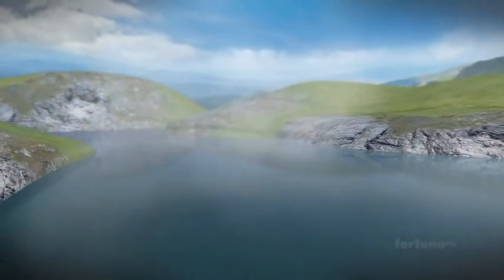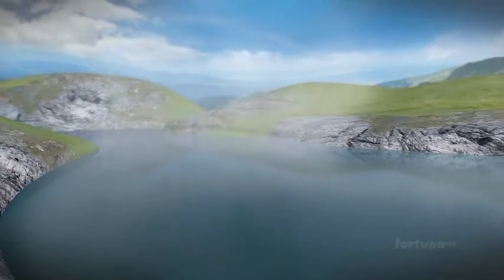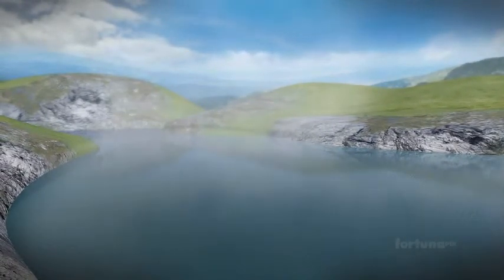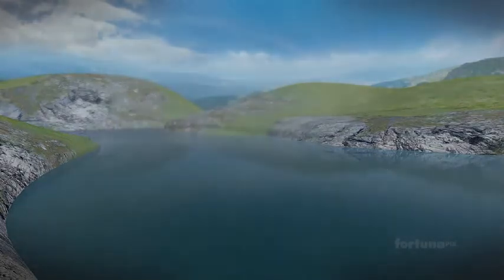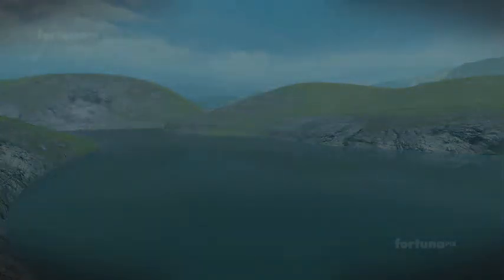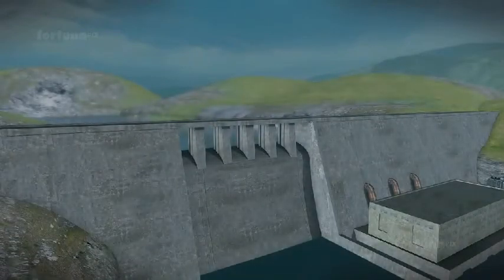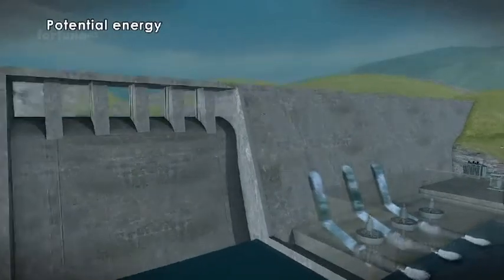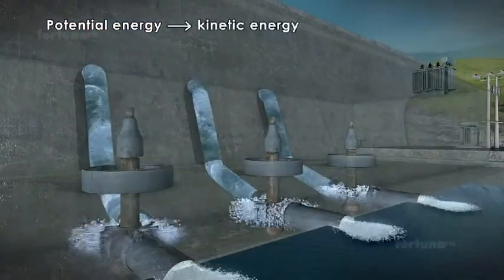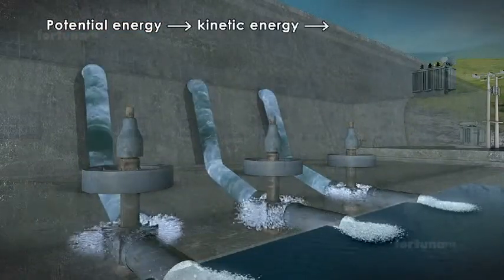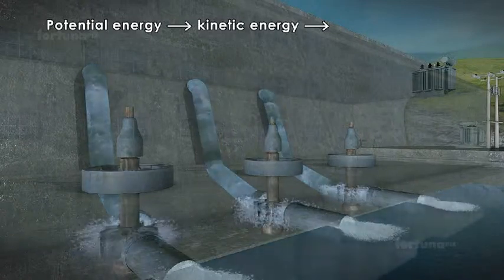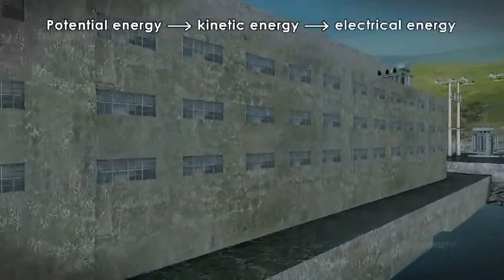Some of this solar energy will also heat the seas and oceans and evaporate water. Some of the energy will convert water vapor back into water in the form of rain, which can be trapped behind a dam. The elevated water behind a dam has potential energy. As the water falls, the potential energy will be converted to kinetic energy, which will rotate the turbine of a generator and produce electrical energy.